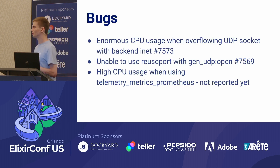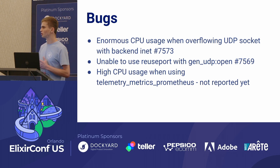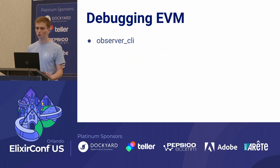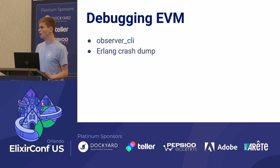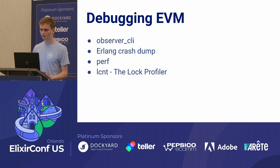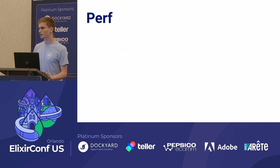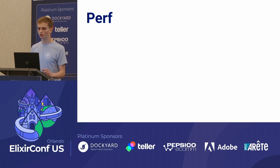Here are the bugs we found. I'm mentioning this because if we had stopped testing on an 8-core machine, we would never have discovered them — it's pretty important to test at a really big scale. Only then can you see whether your system really scales correctly. Speaking of debugging the Erlang virtual machine, you can use pretty easy tools like Observer CLI or Erlang crash dump. They are very helpful, but in our case we needed something more specialized: perf and LCNT. LCNT is the lock profiler, but to use it you have to recompile the Erlang virtual machine, so we focused on perf.